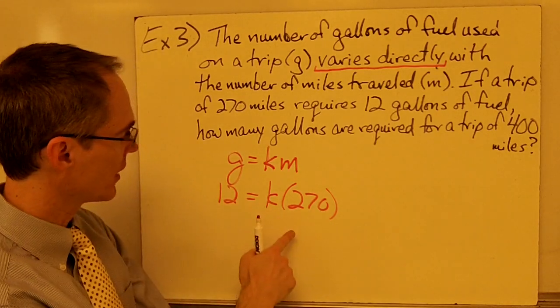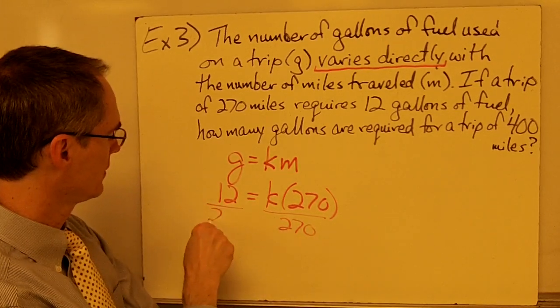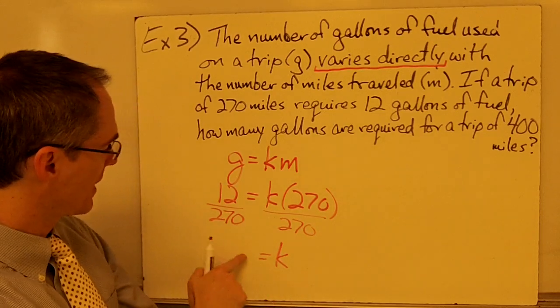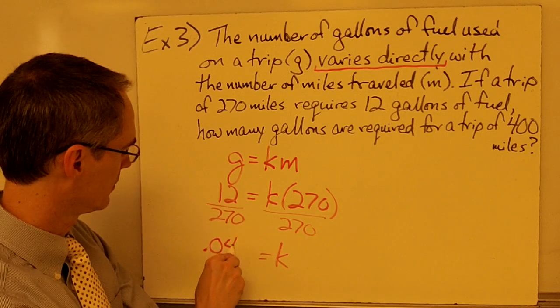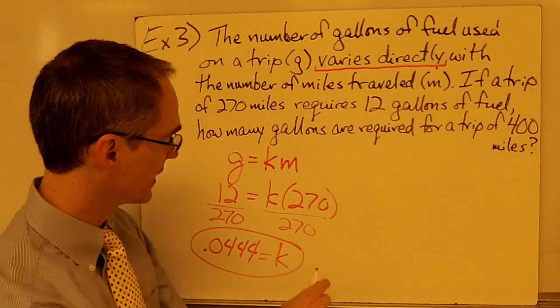And again, I've got a simple algebraic equation here that I can solve. Divide both sides by 270. And now I know that my value for k, if I punch that into my calculator, I get 0.0444. Now that I know my value for k,